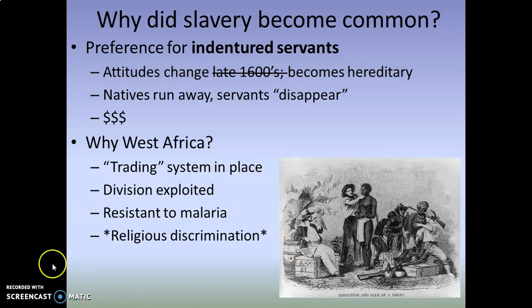From the beginning, religious discrimination was also a factor. The discrimination eventually became racially based, but initially religion was a big part of it. West African societies were not Christian — plain and simple, they weren't practicing Christians — so they were seen by Europeans as uncivilized. To justify the practice of humans owning other humans, many looked towards Christianity and used the Bible to justify it. These factors combined to explain why West Africa became the labor force.